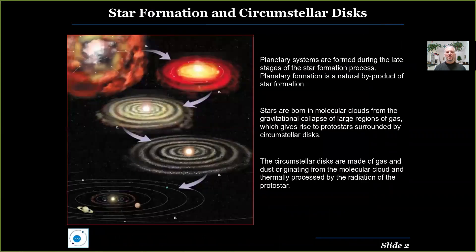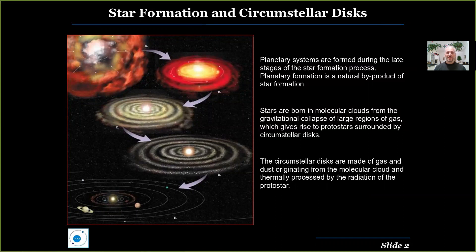Planetary formation is a process that is built into the star formation process. The collapse of molecular clouds causes the formation of a central clump that becomes a star surrounded by a disk. Gas falling along the direction of the rotation axis is not supported by rotation and falls toward the center, while gas orbiting perpendicular to the rotation axis — on the plane of rotation — is supported by rotation and forms a disk-like structure.